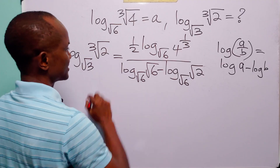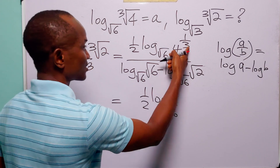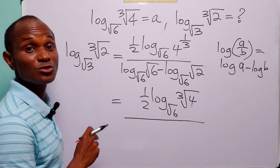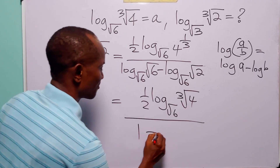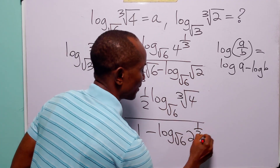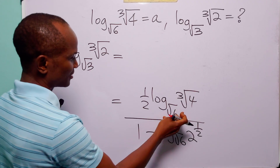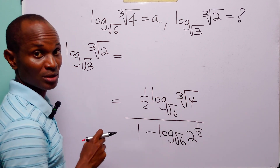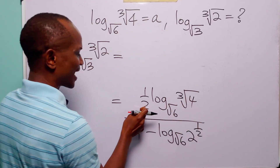This can be written as one half times log to base root 6 of the cube root of 4, divided by: log to base root 6 of root 6 is equal to 1, minus log to base root 6 of 2 to the power half. Now looking at the numerator, we have log to base root 6 of the cube root of 4, which we know equals a. So the numerator is one half times a.